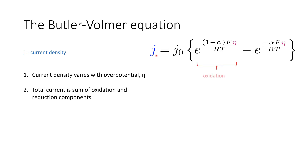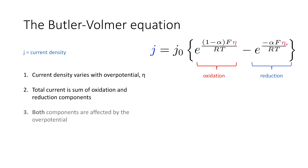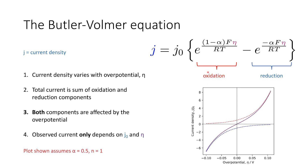The total current is the sum of the oxidative process and the reductive process. This eta term, this overpotential term, appears in both, so both are affected by the potential that we apply. Fundamentally, the observed current that we see in our cell only depends on the exchange current density J0 and our overpotential eta.